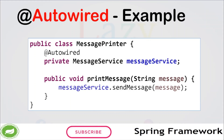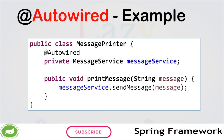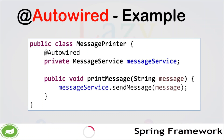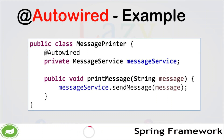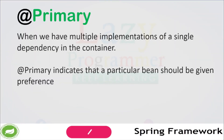The same can be done for a constructor or setter method as well. This allows for loose coupling between MessagePrinter and MessageService classes, because there is no code written to create an object of MessageService inside MessagePrinter. This makes it easier to change the implementation of MessageService without affecting MessagePrinter. Everything will be fine if we have only one implementation of the dependency — @Autowired will be able to resolve it automatically by type.